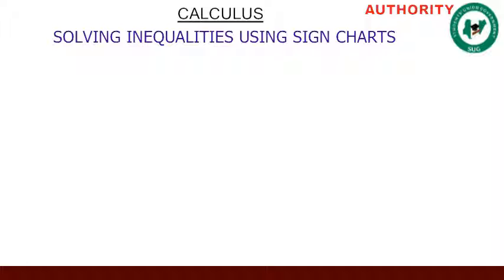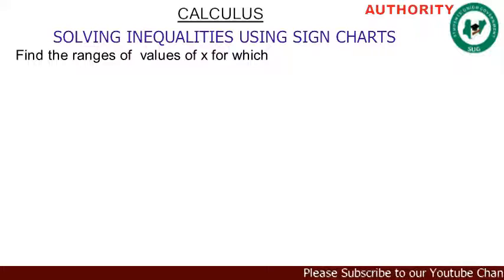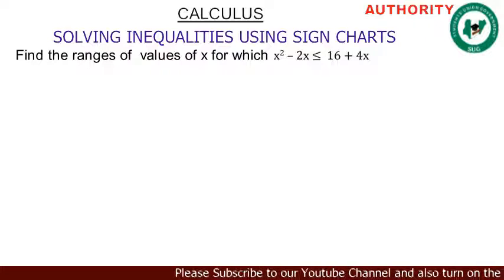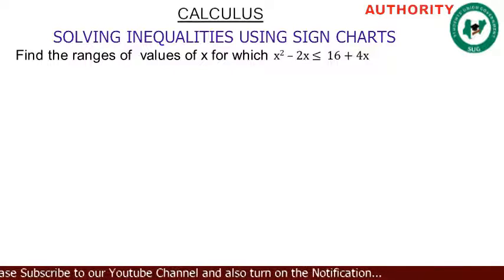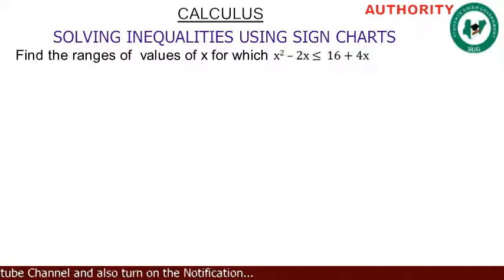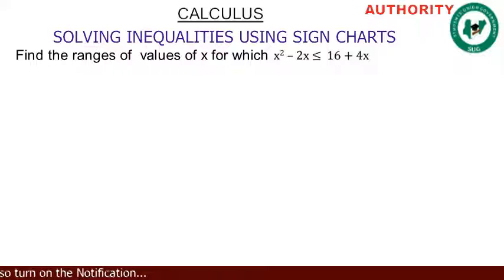All right, welcome again. We are still in calculus, solving inequalities using sign charts. This one says: find the range of values of x for which x squared minus 2x is less than or equal to 16 plus 4x.